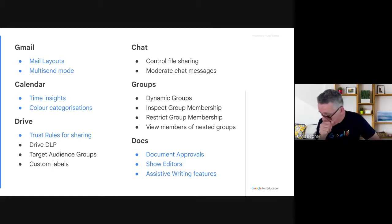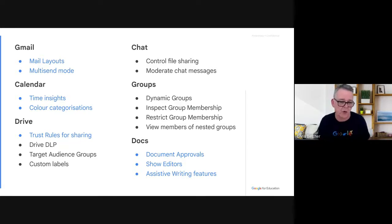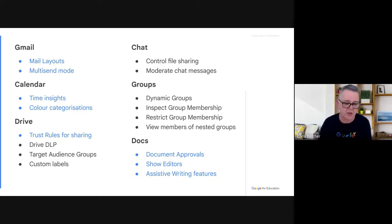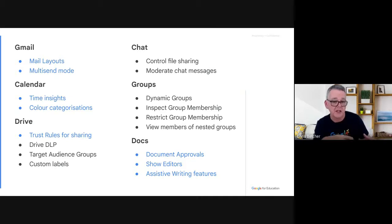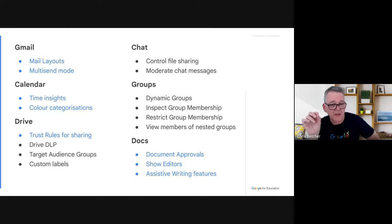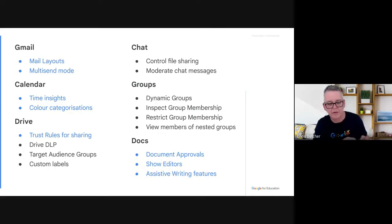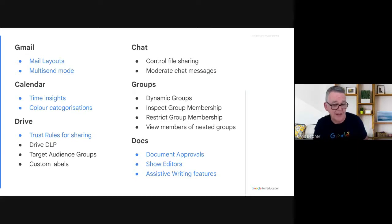In Google Drive, there are some interesting things. Trust Rules for Sharing lets you isolate organizational units or groups from each other. A classic example: you don't want students in Year 6 to be able to share documents with students in Year 7. You can set up a boundary around certain groups so they can only share with or receive from the groups you allow. We've also got Drive DLP — Data Loss Prevention. For example, if someone creates a Google Doc containing sensitive information like a credit card number or student ID and tries to share it outside the domain, DLP can flag that, alert people, or even prevent it from happening.